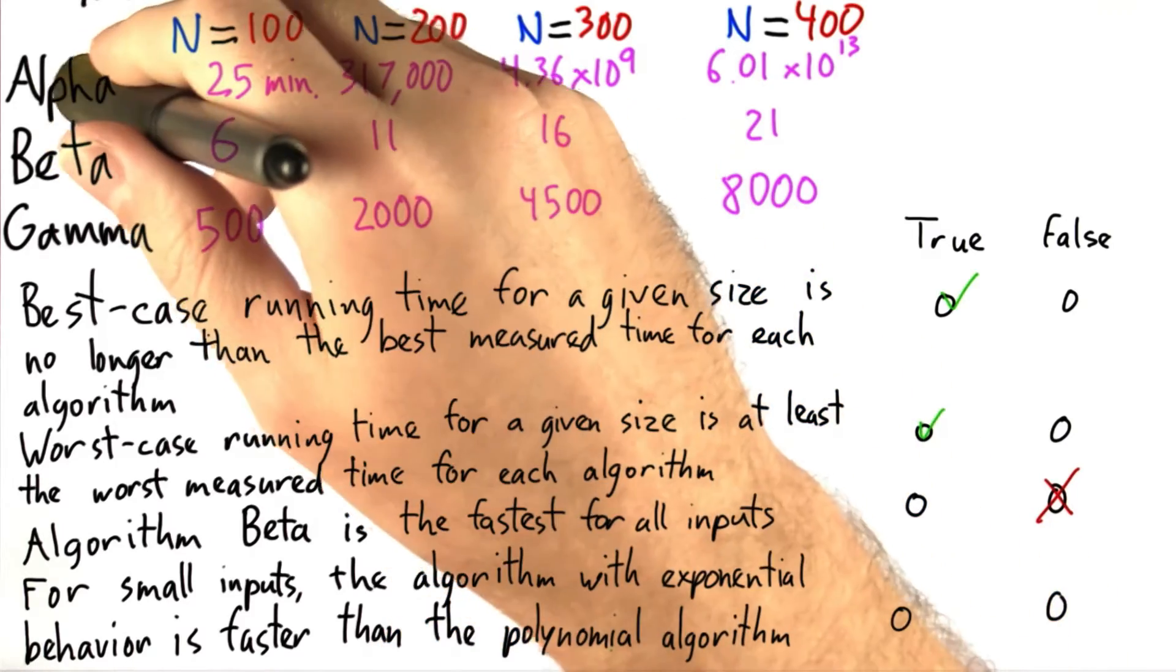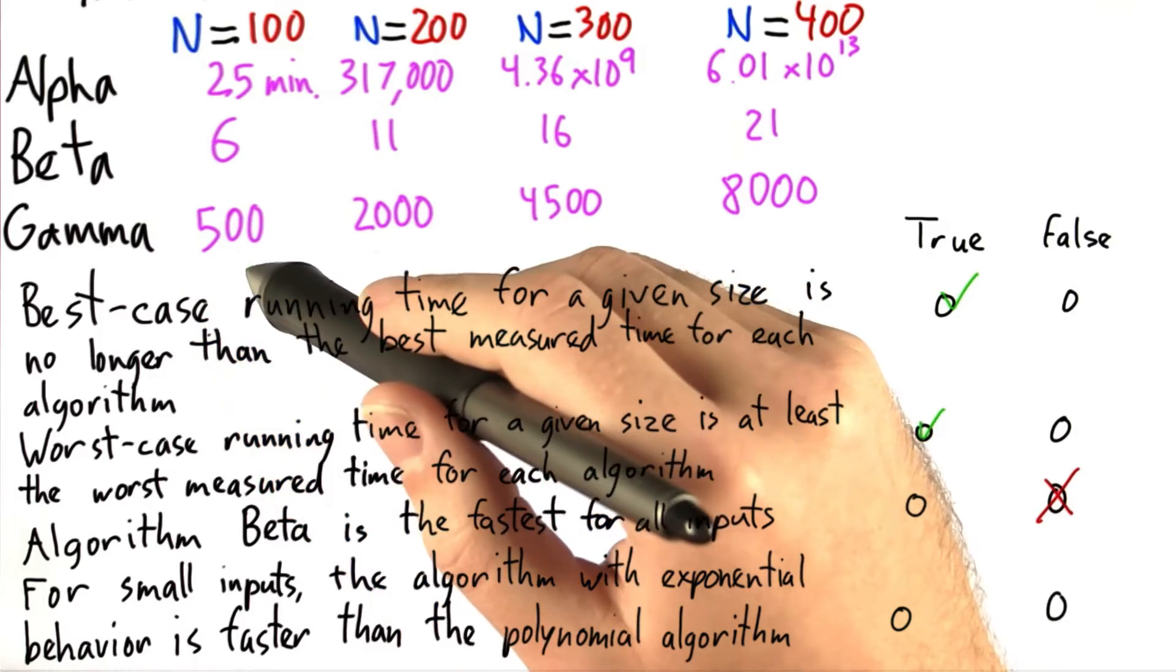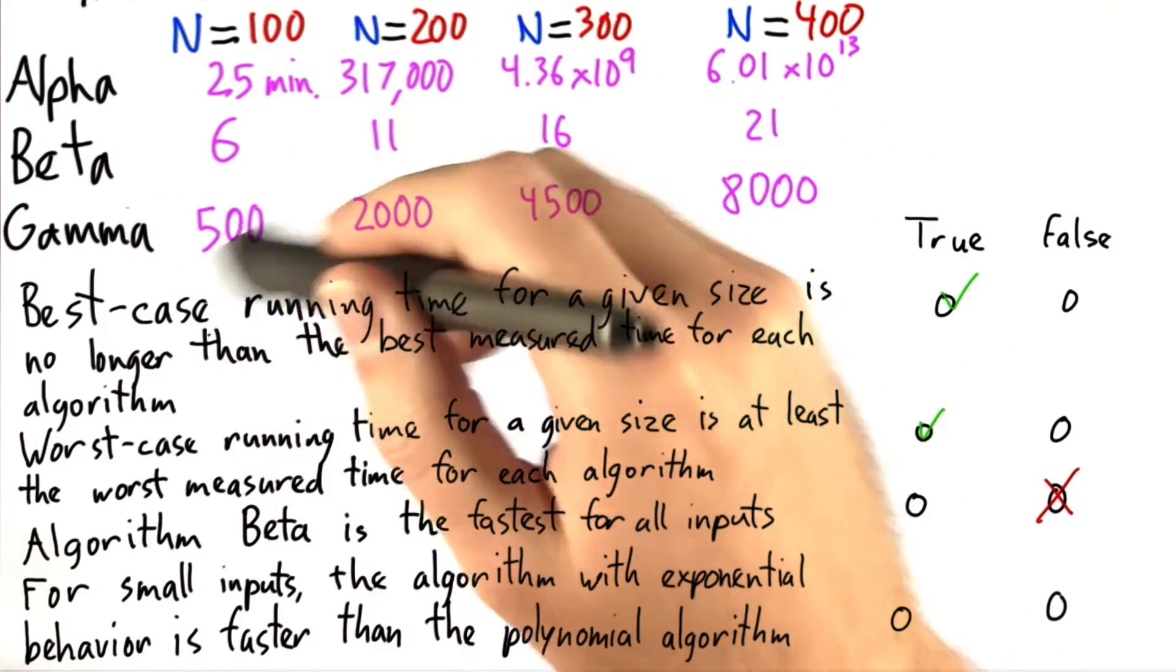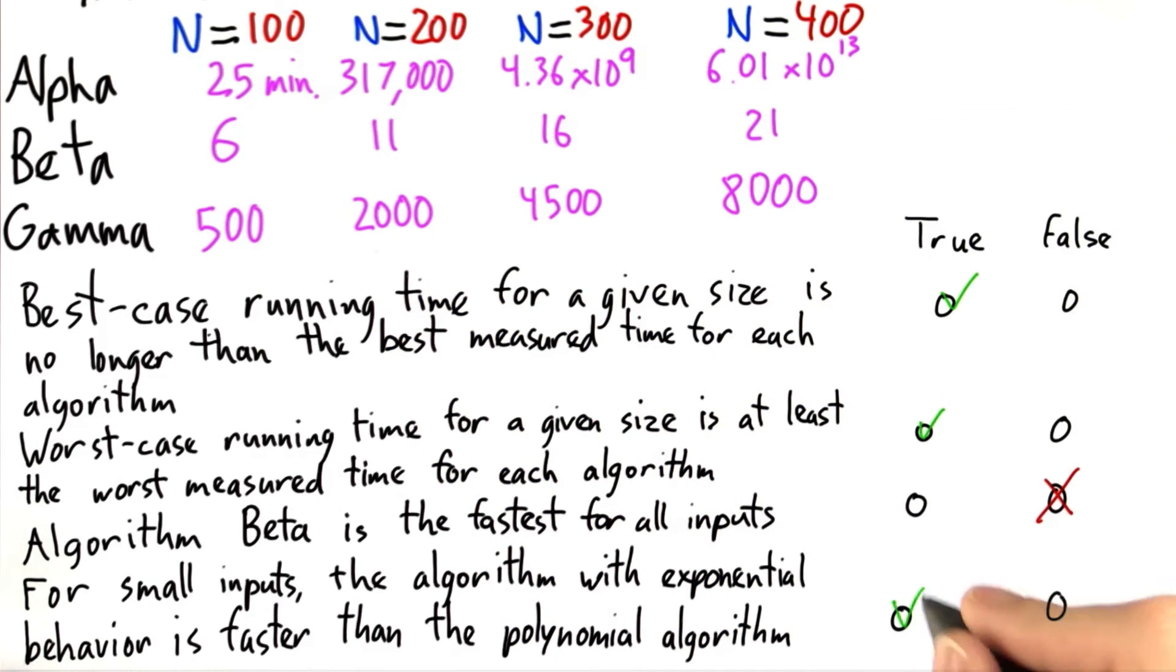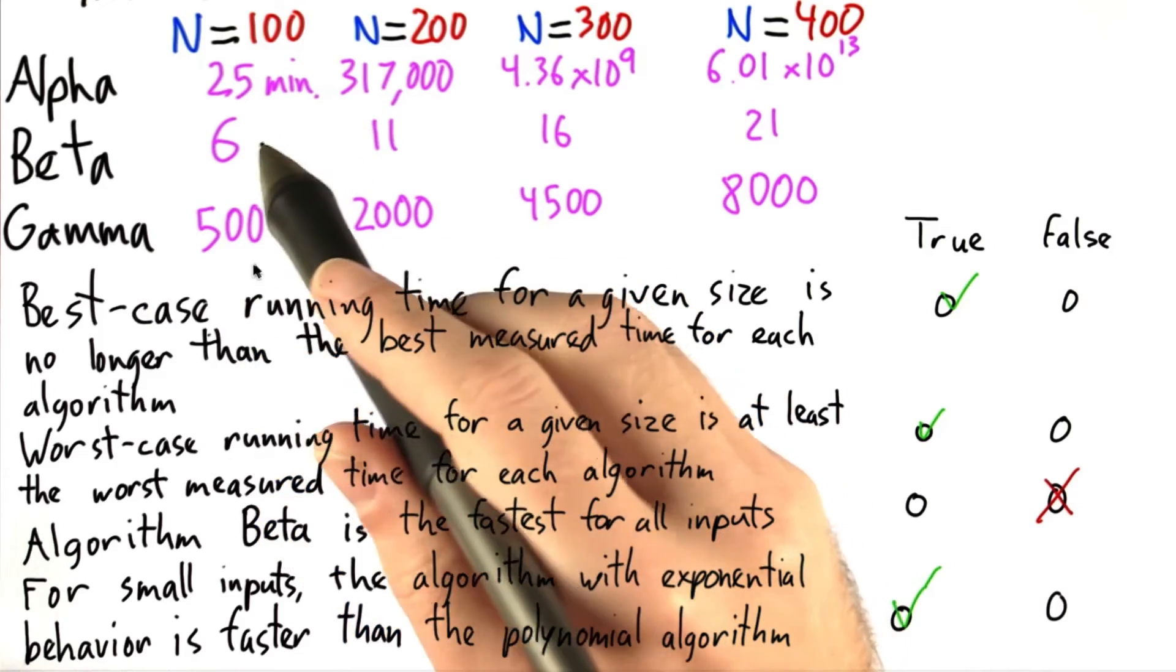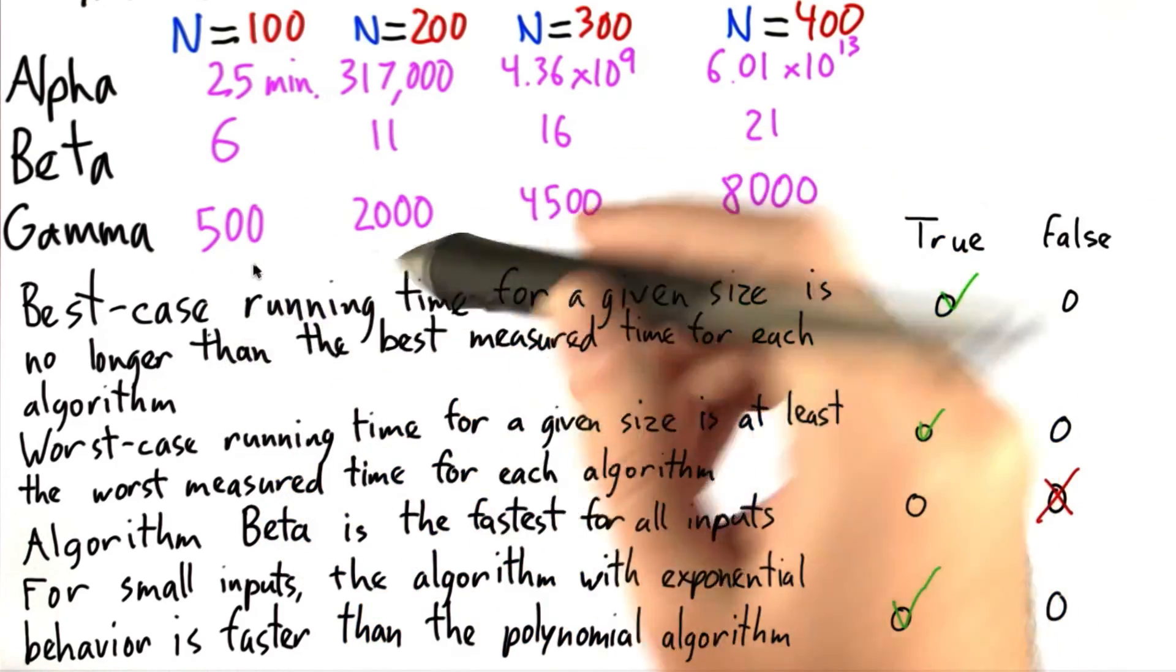If you look at Alpha and Gamma, Alpha being the exponential algorithm and Gamma being the polynomial one, it actually is faster. 25 minutes is quite a bit faster than 500. So this is actually true. And it's interesting to see that sometimes for small inputs an exponential algorithm isn't really that big of a deal.